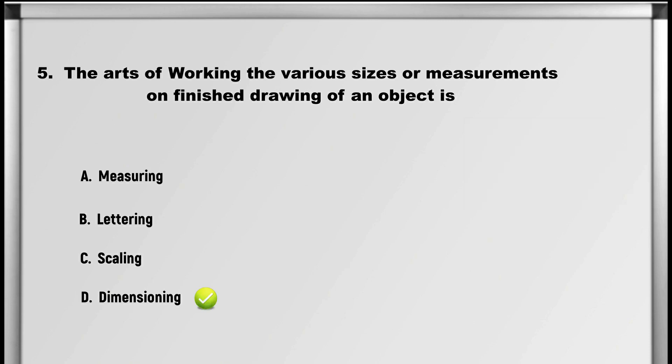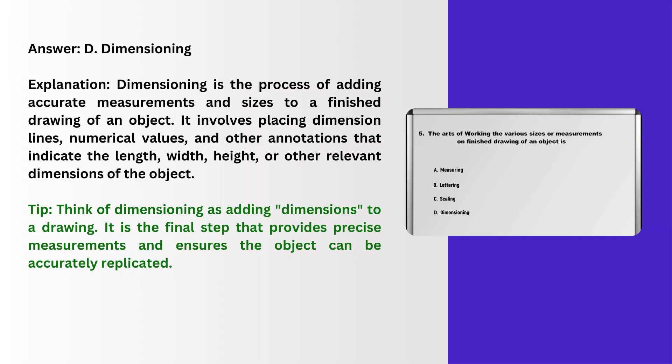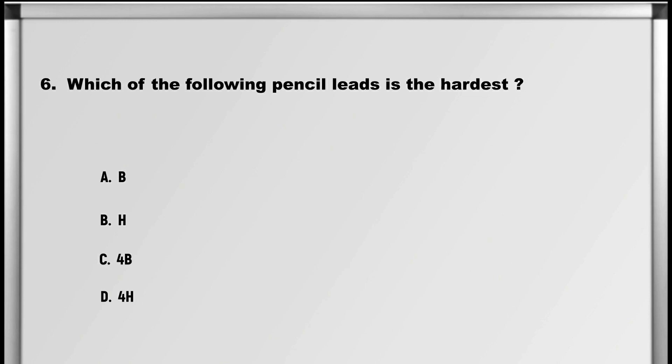Answer: D. Dimensioning. Explanation: Dimensioning is the process of adding accurate measurements and sizes to a finished drawing of an object. It involves placing dimension lines, numerical values and other annotations that indicate the length, width, height or other relevant dimensions of the object. Tip: think of dimensioning as adding dimensions to a drawing — it is the final step that provides precise measurements and ensures the object can be accurately replicated.